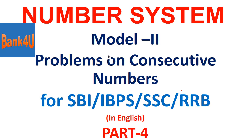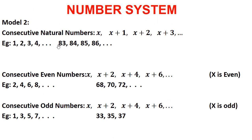Consecutive numbers are those numbers which come one after the other at regular intervals. There are various types of consecutive numbers. The first one is consecutive natural numbers, which are those natural numbers that come one after the other, and can be represented as x, x+1, x+2, x+3, and so on.